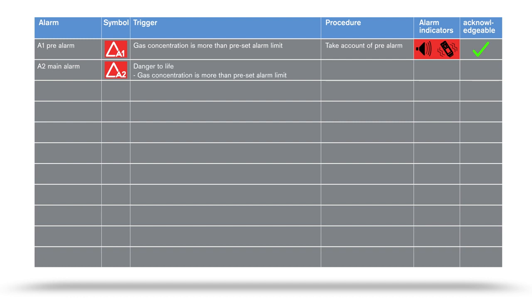An A2 main alarm indicates danger to life. If this alarm sounds, leave the hazard area immediately. This alarm is non-acknowledgeable.